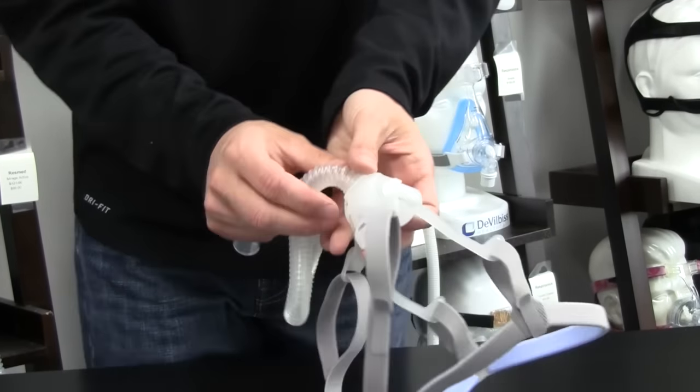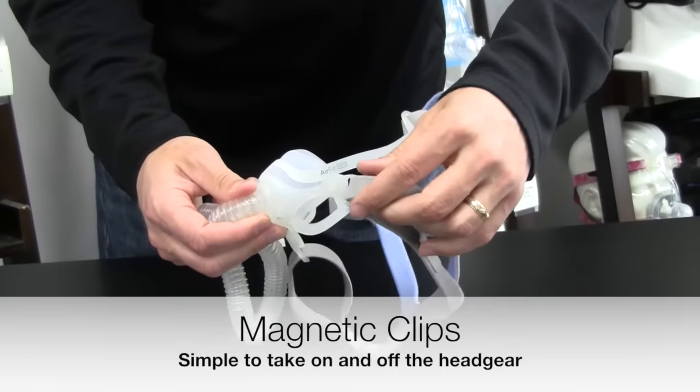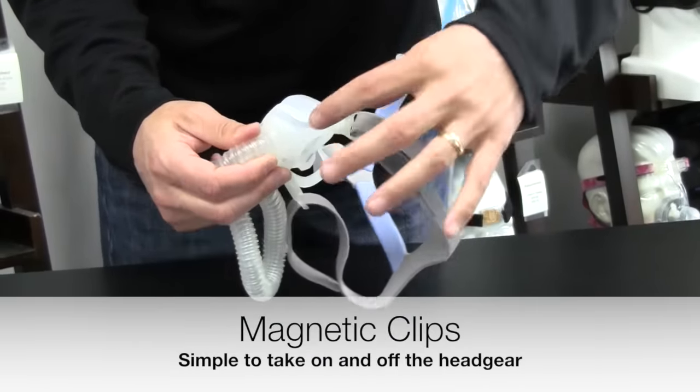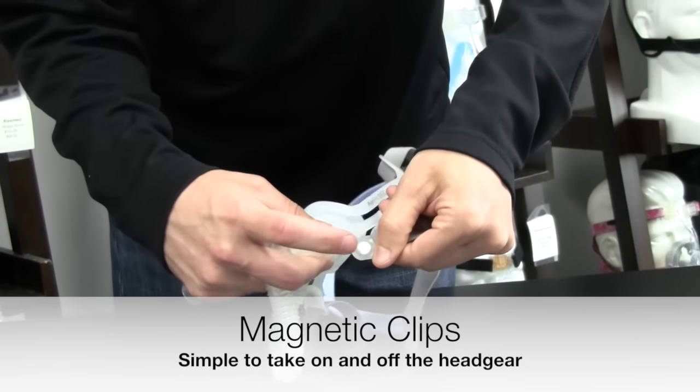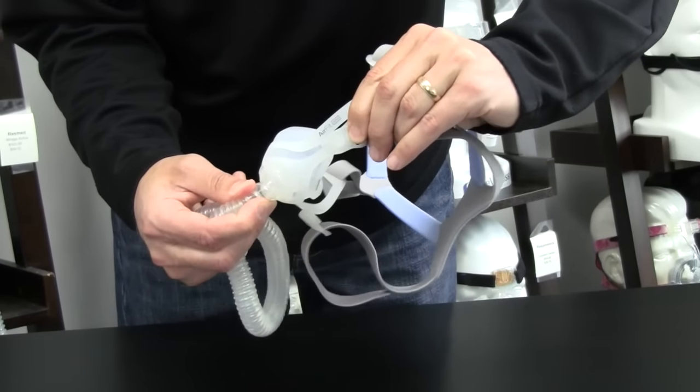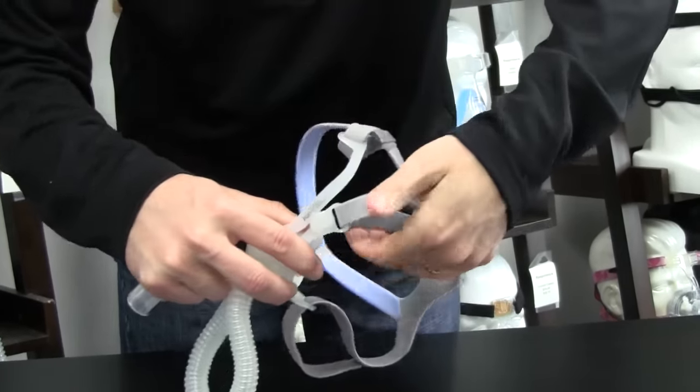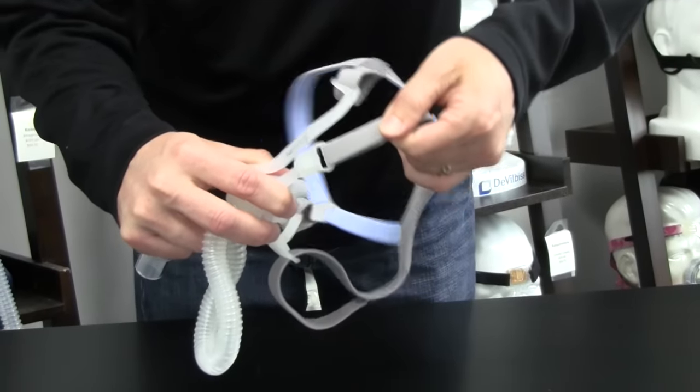Another unique feature with this mask is they use these magnets to hold the bottom two strap headgears into place. There's no clips anymore. There's actually a lip on here. The magnet is set back in, so it fits great. And it's really hard to pull it out. If you pull it out this way, it's easy. But how the mask is going to sit on your face, that's not moving.